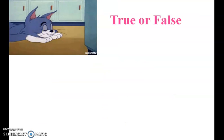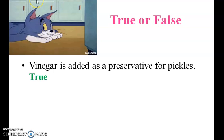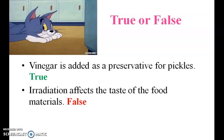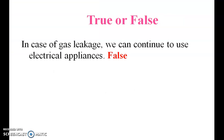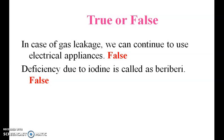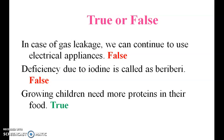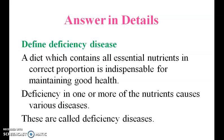Now let us see the true or false. In case of gas leakage, we can continue to use electrical appliances — False. Deficiency due to iodine is called beriberi — False. Growing children need more proteins in their food — True. Now let us see the answer in detail.